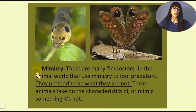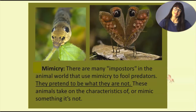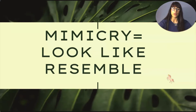There are many imposters in the animal world that use mimicry to fool predators — they pretend to be what they're not. These animals take on the characteristics of, or mimic, something they aren't. The key words to remember for mimicry are look like and resemble, which will help you distinguish the definition of camouflage from the definition of mimicry.